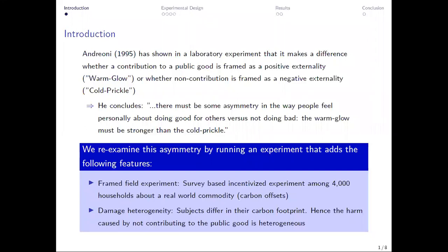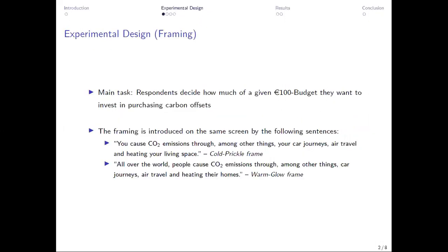And we had the feature of damage heterogeneity, which means that subjects differ in their carbon footprint and therefore the harm caused by not contributing, so not buying carbon offsets, is heterogeneous among the respondents. And their main task is to just decide how much of a given €100 budget they want to invest in purchasing carbon offsets.